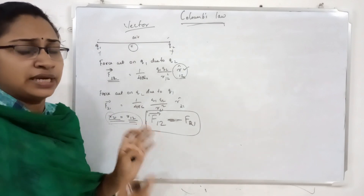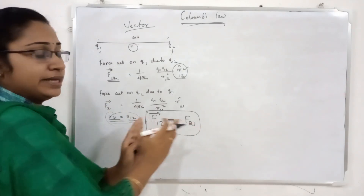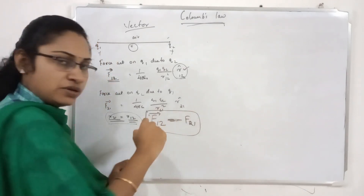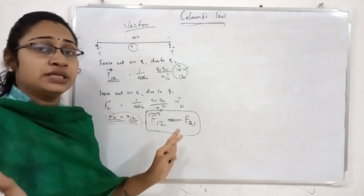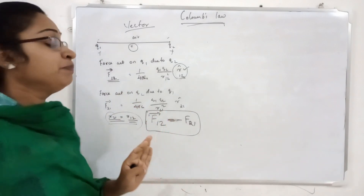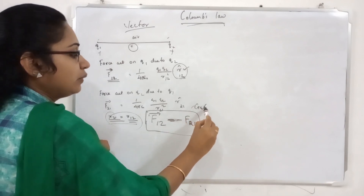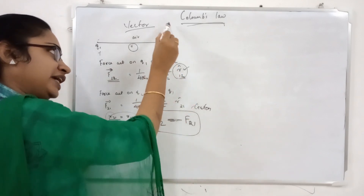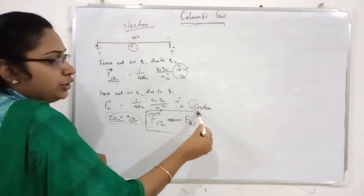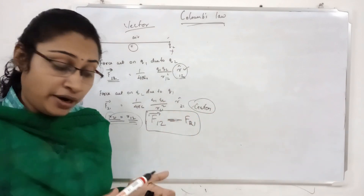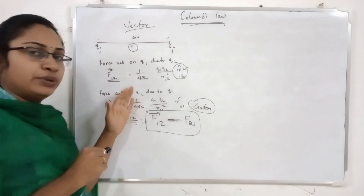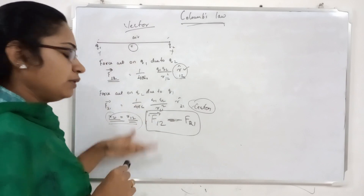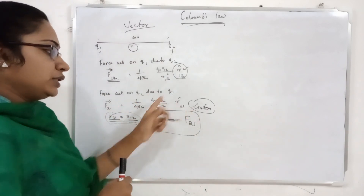The force of attraction — F2 is equal to minus F1. This is the force of attraction in the opposite direction. Equal and opposite force — this is Newton's third law. Equal and opposite force in the vector form of Coulomb's law — Newton's third law.